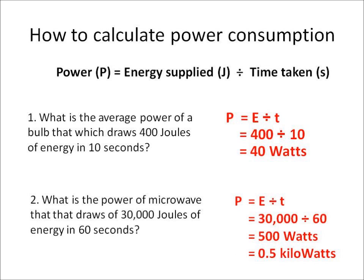There's another way to calculate power. Remember, power is the rate of energy supplied, which is the same as energy supplied divided by the time taken, so P equals E divided by T — power equals energy divided by time. For example: what's the average power of a bulb which draws 400 joules of energy in 10 seconds? That's 400 divided by 10, which equals 40 watts.